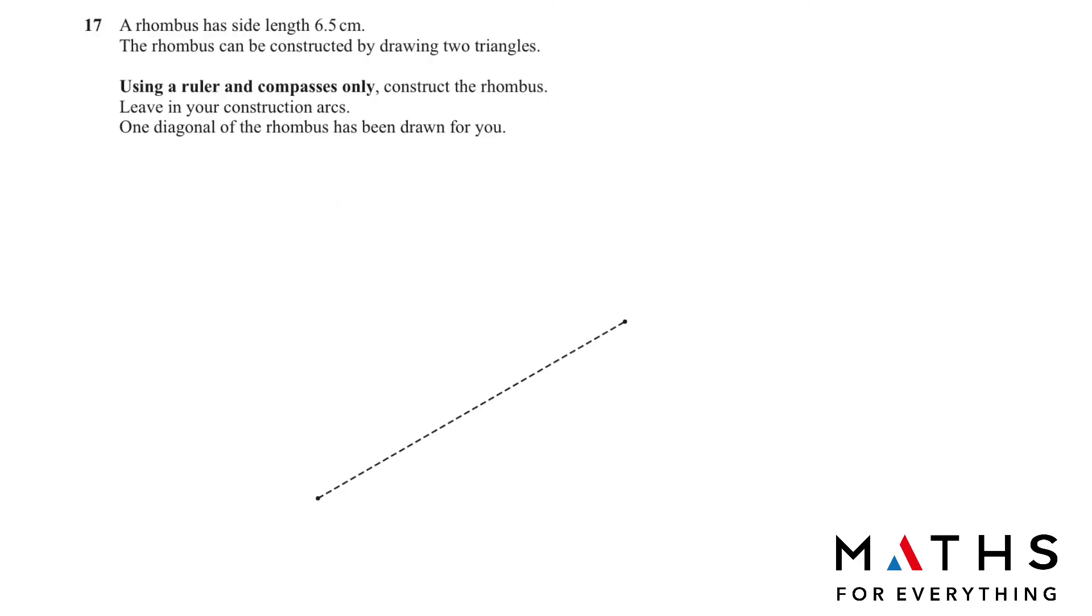Question number 17: A rhombus has side length 6.5 centimeters. The rhombus can be constructed by drawing two triangles using a ruler and compass only. Construct the rhombus. One diagonal of the rhombus has been drawn for you. We need to measure 6.5 centimeters using a compass, and then from this point you make an arc here.